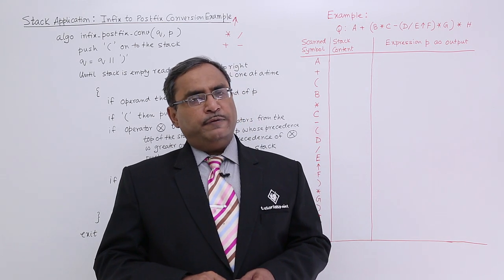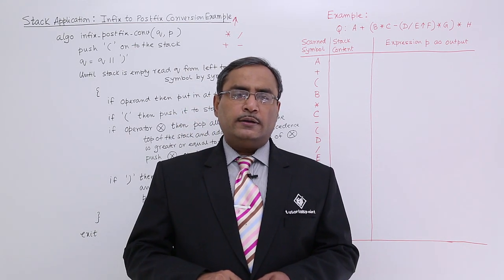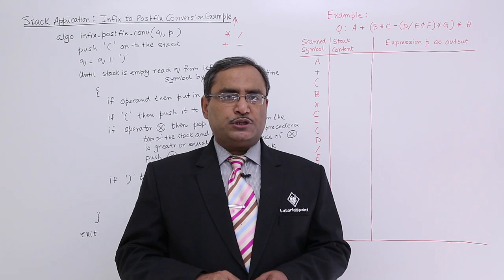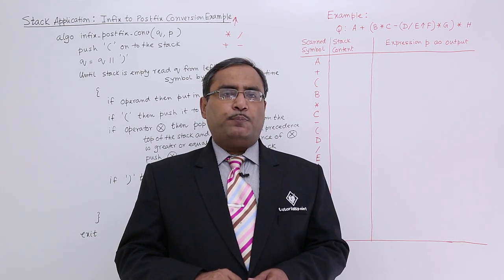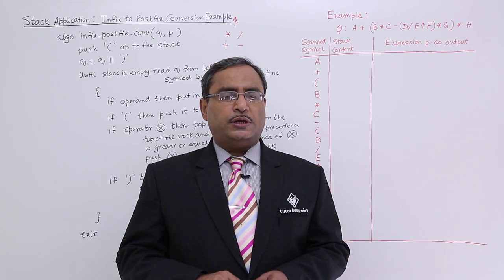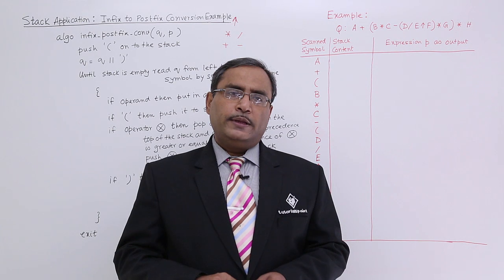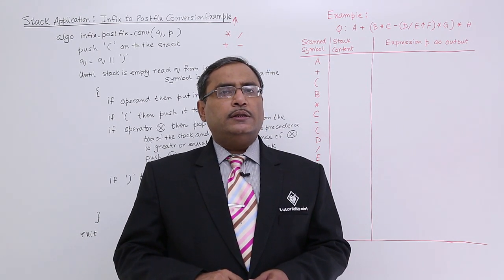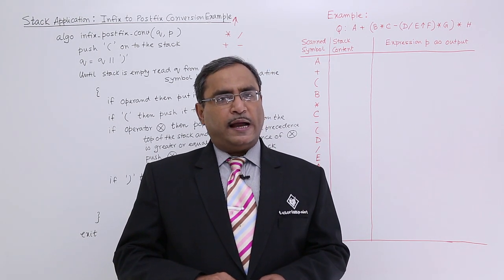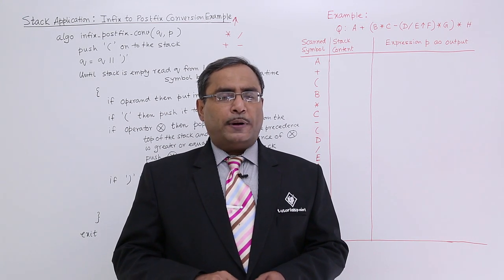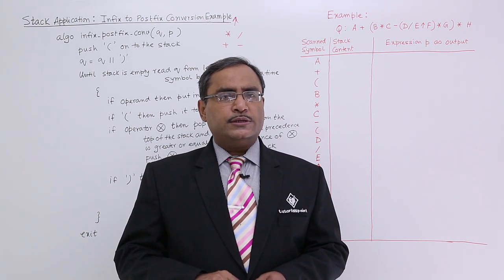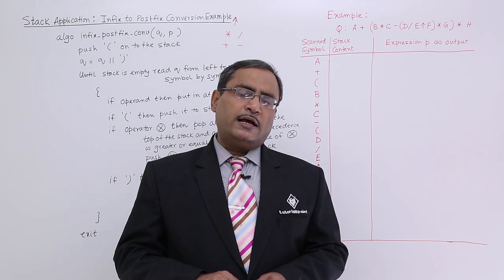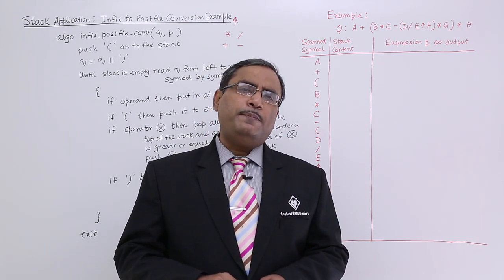In that algorithm, it was stated that Q is the infix expression given and P is the postfix expression that will be the output. If we scan one infix expression, we shall get four different types of symbols: operand, operator, open parenthesis, and closing parenthesis.